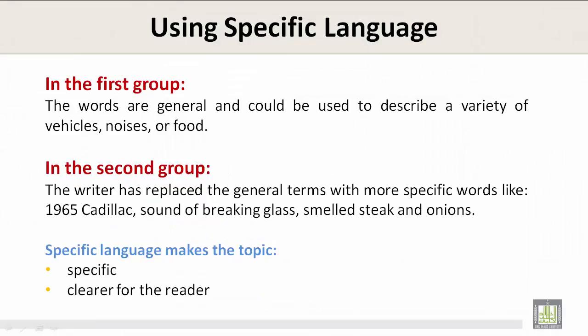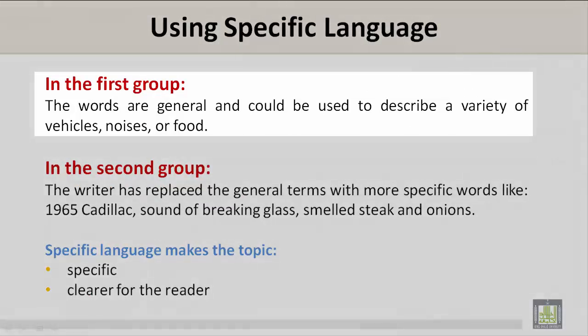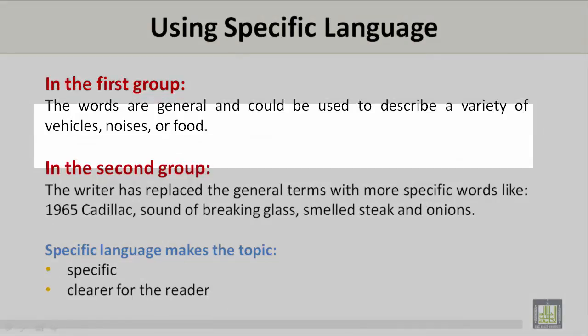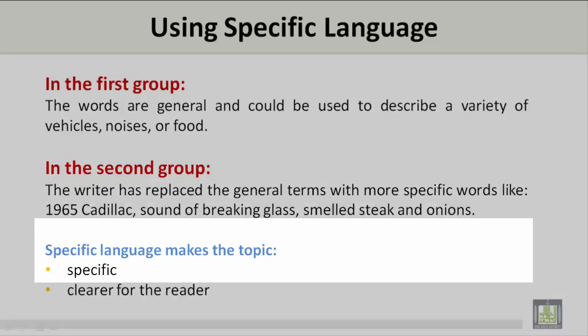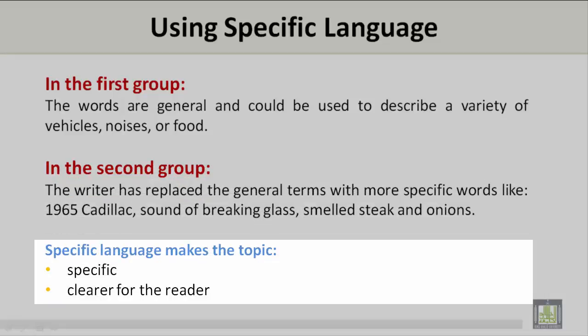Let's continue. In the first group, the words are general and could be used to describe a variety of vehicles, noises, or food. In the second group, the writer has replaced the general terms with more specific words like 1965 Cadillac, sound of breaking glass, and smelled steak and onions. Specific language makes the topic clearer for the reader.